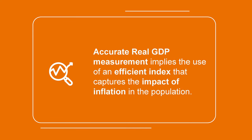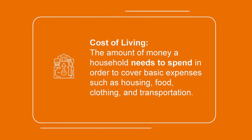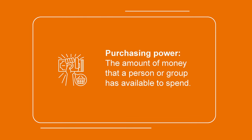In order for real GDP to be as accurate as possible, we need to capture the actual effect of inflation in the economy. In other words, accurate real GDP measurement implies the use of an efficient index that captures the impact of inflation in the population. In order to do this, we need to measure the cost of living. The cost of living is the amount of money a household needs to spend to cover basic expenses such as housing, food, clothing, and transportation. In order to measure it, we need to make comparisons in terms of purchasing power — the amount of money that a person or group has available to spend.